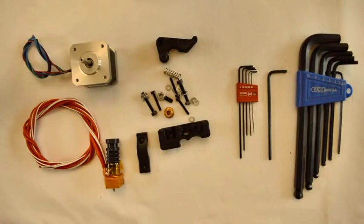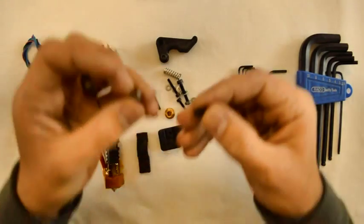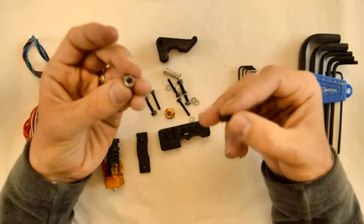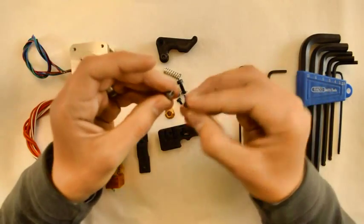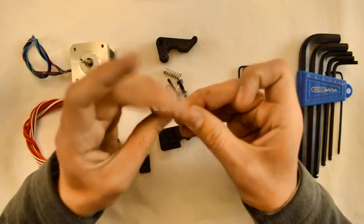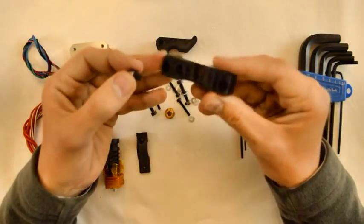The next step is to assemble the adjustment mechanism to be able to adjust tension in the extruder. How you'll do that is you'll take the M5 nut and the M5 grub screw. Assemble them together like that, and this will go into the base component.